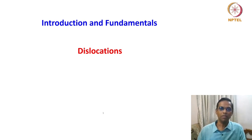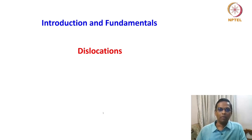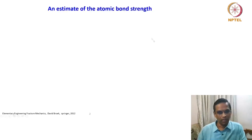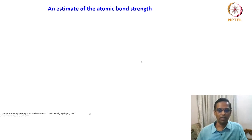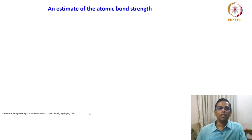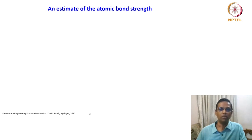It is better to spend some time on this as a background before proceeding with the course. Before going to the dislocation introduction, we will spend some time on an estimate of atomic bond strength. We have already looked at different kinds of bonds, bond length, bond strength, and different kinds of bonding. Now, suppose if you theoretically try to estimate how much energy is required to break an atom-to-atom bond — this is a theoretical estimation of bond strength.